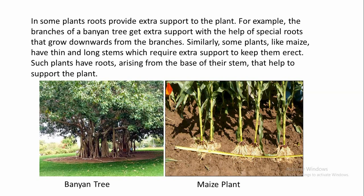Similarly, some plants like maize have thin and long stems which require extra support to keep them erect. Such plants have roots arising from the base of their stem that help to support the plant. Here you can see the banyan tree and the maize plant — you can clearly see the roots coming out for extra support.